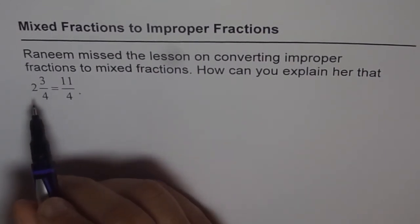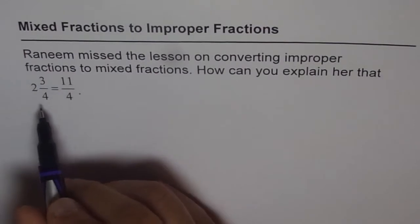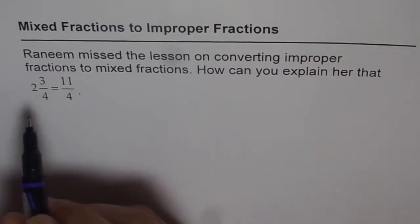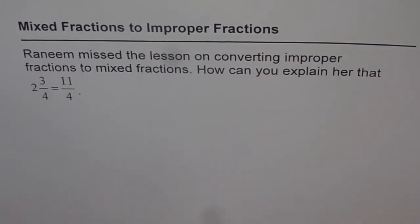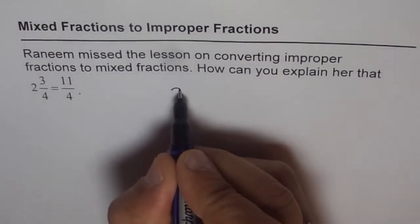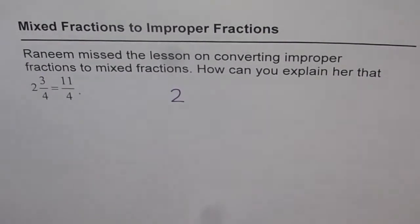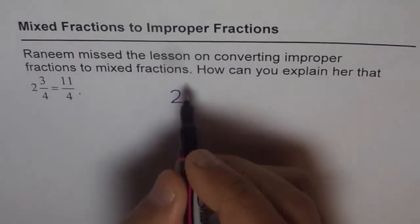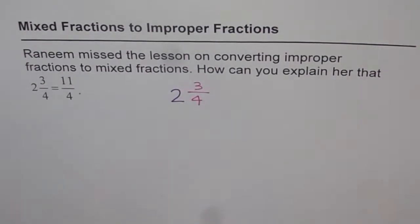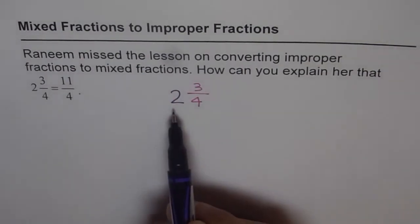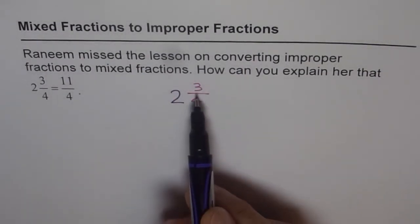Well, 2 3/4 as you can see is a mixed number. It has a whole number which is 2, and 3/4 is a fraction. Let us rewrite this. It is like 2, this 2 is a whole number, and then we have a part attached to it which is 3/4. So basically it is a mixed number. It has both a whole number and a fraction.